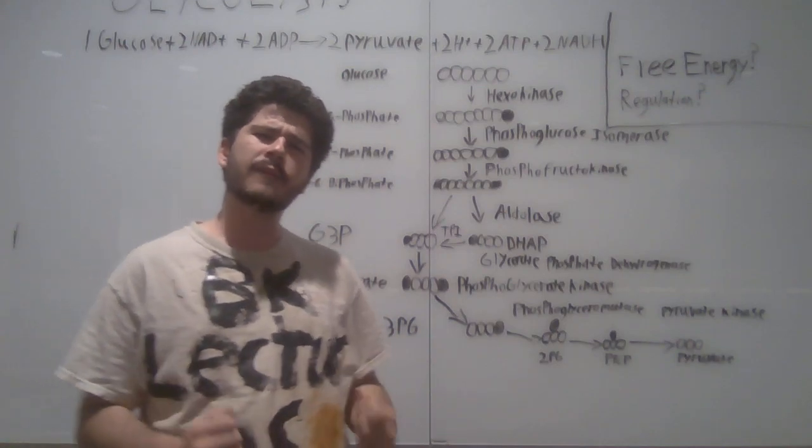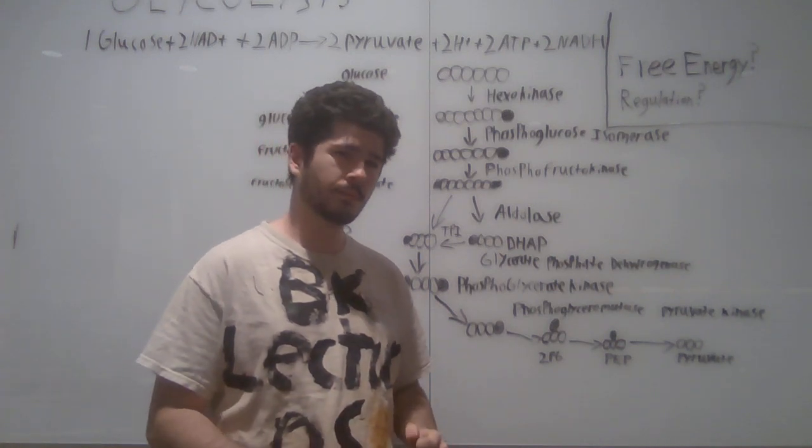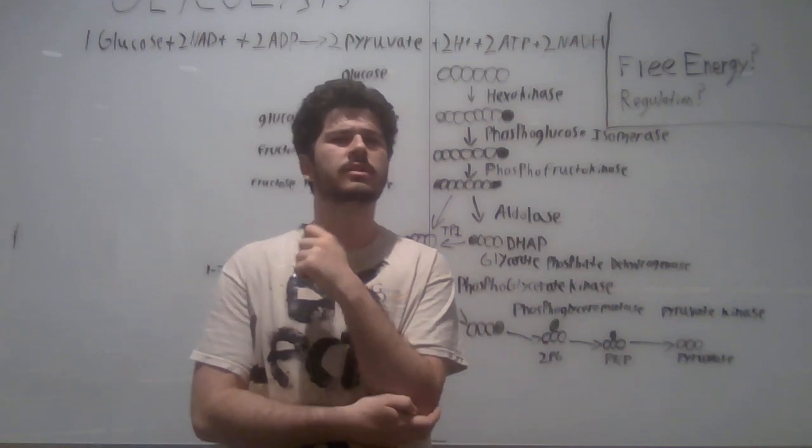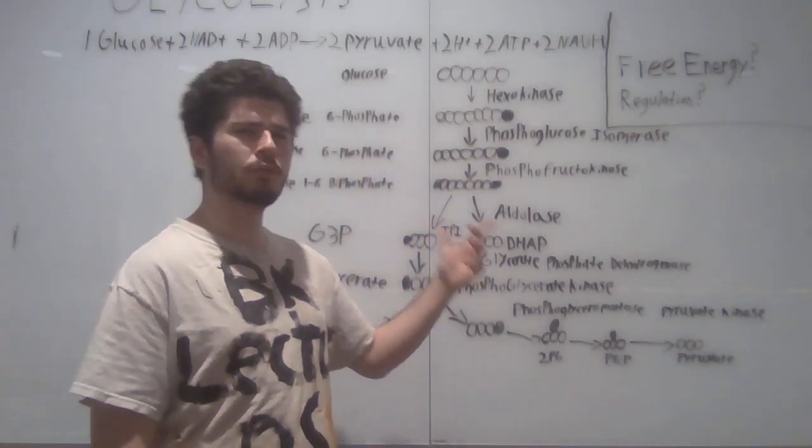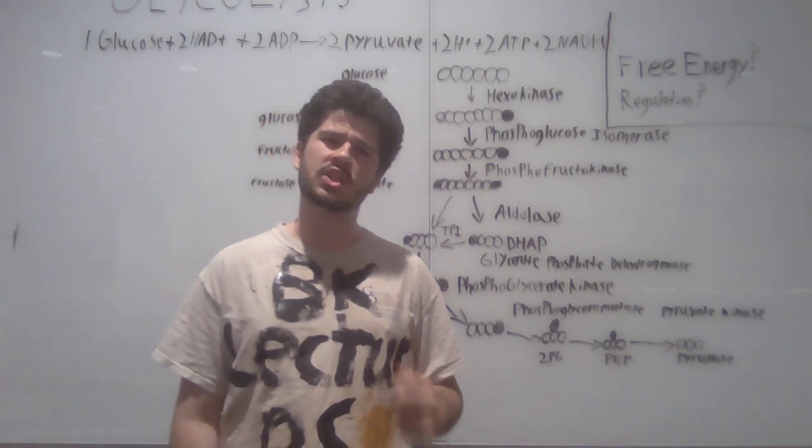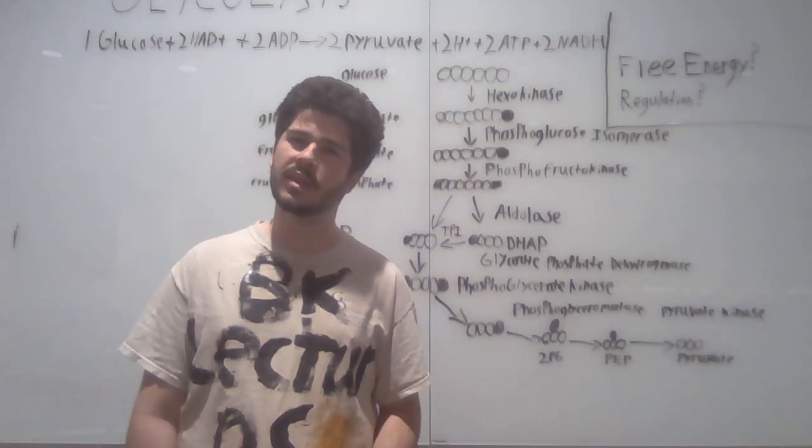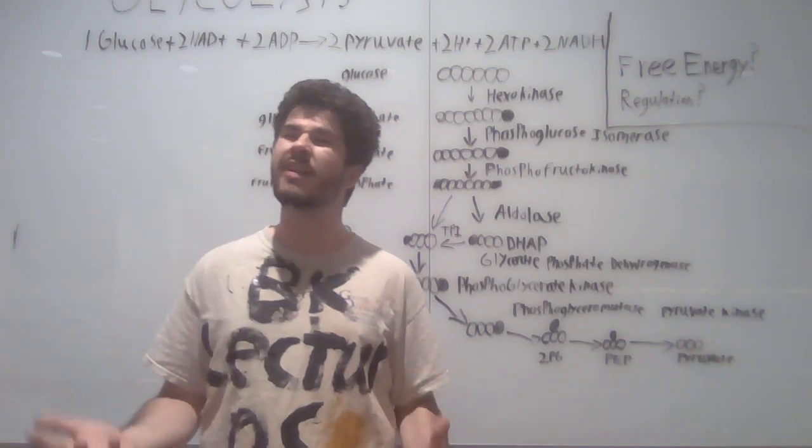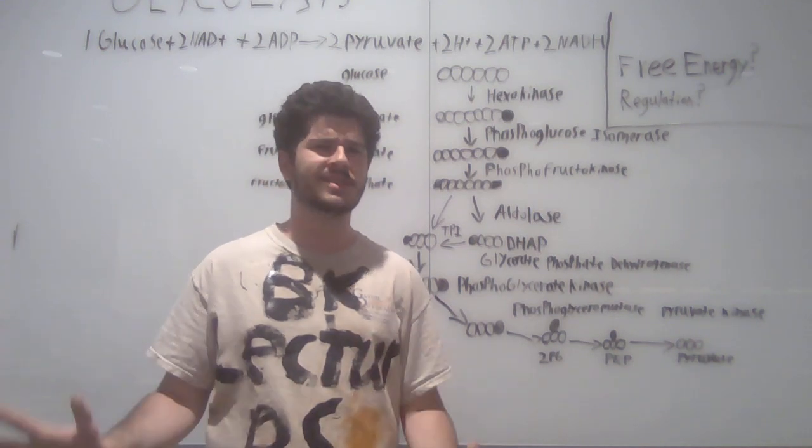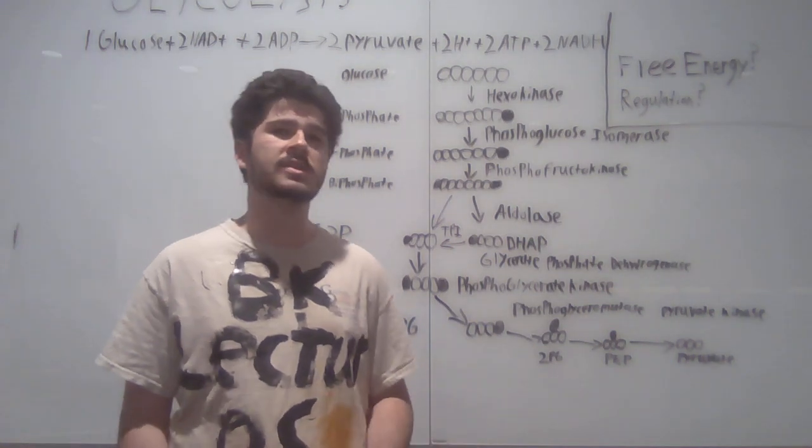Before we look at the overall path of glycolysis, we have to answer a few questions. Why is it that the standard delta G of many of these reactions is different from the free energy delta G that we see in our body? This is because the standard delta G represents these reactions in a vacuum. However, in our body with the free energy delta G, it represents these reactions amidst many other factors like concentration of substrate, of product, of cofactor, or the enzyme itself, which gives us significantly different delta G free energy versus delta G standard.